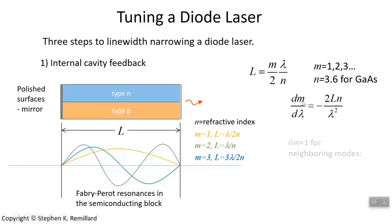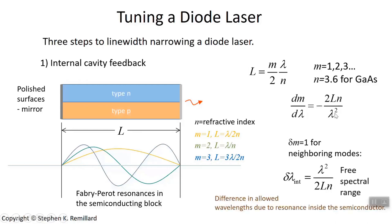Let's ask this question: how far apart in wavelength are neighboring modes? Let dm equal 1 and solve. We'll have this delta lambda, which is what's left, lambda squared over 2ln. That's how far apart two neighboring modes are. This lower case delta lambda sub int means a resonance due to the internal cavity, that is the semiconductor block. We're going to later have an external resonance due to everything outside. It's called the free spectral range, how far apart the resonances are.